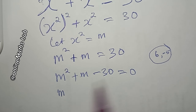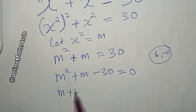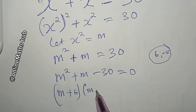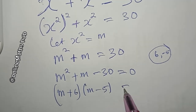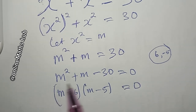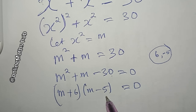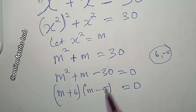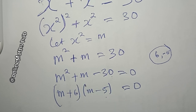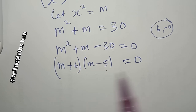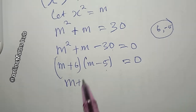So I'm going to write this as (m + 6)(m − 5) = 0. When you factorize, this is what you get, and multiplying these two brackets takes you back to the previous line.